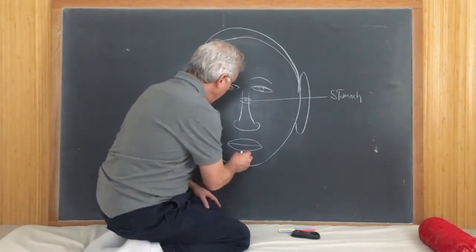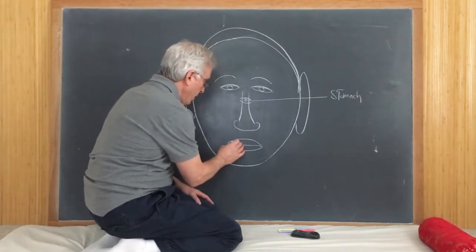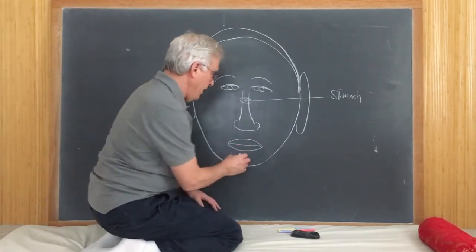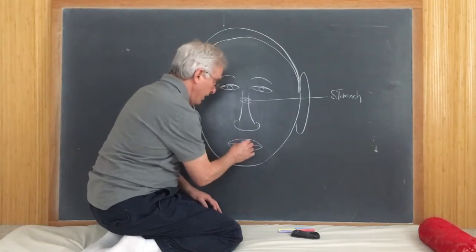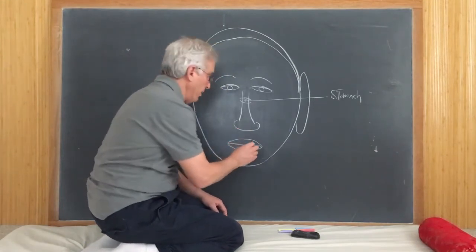The stomach can also be seen in the upper lip with the left side being the upper stomach and the right side being more the lower stomach.